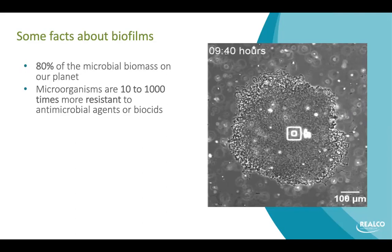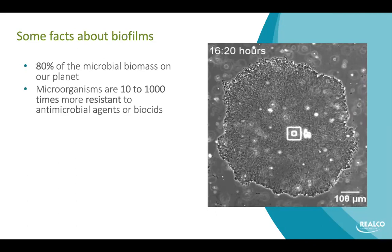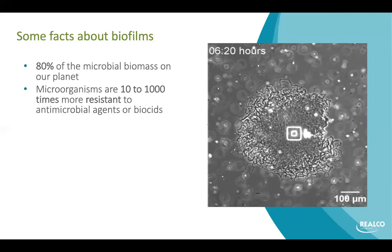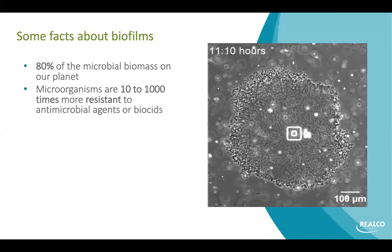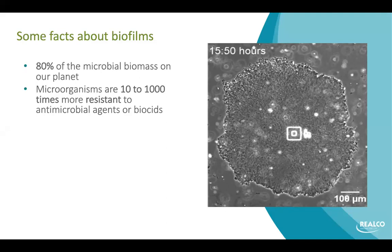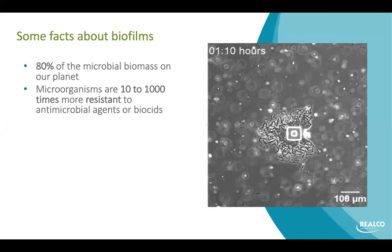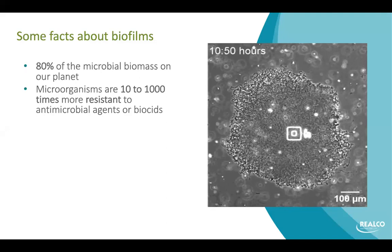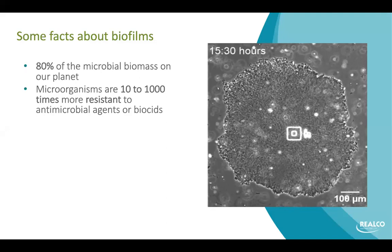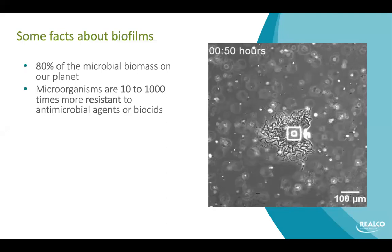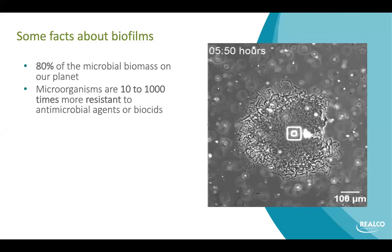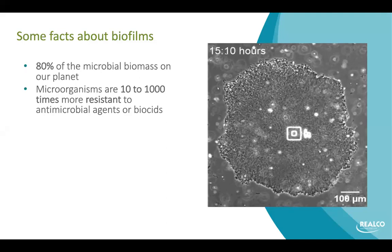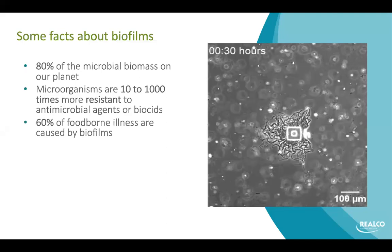Inside the biofilm, microorganisms are from one to one thousand times more resistant to biocides or sanitation. The reason is because they are under stress, and in stress mode those germs will be more resistant. Also, the biofilm and the protective matrix will protect microorganisms — they are not accessible. That's why you have to apply a quite huge amount of biocide to try to eradicate the biofilm, and it's not always possible to apply one-thousand-times-more concentrated biocide in food or catering.